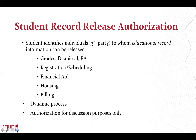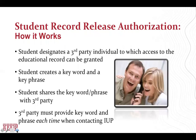This authorization is for discussion purposes only. Parents and family members still do not have the right to order a transcript on the student's behalf, but the student can order the transcript and share it with family members. In order to authorize access of a student's educational record, the student designates a third party individual to which access can be granted. The student creates a keyword and a key phrase, then shares the keyword and key phrase with the third party, who must provide them each time when contacting IUP.